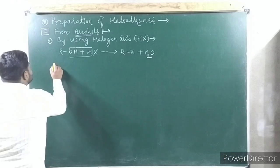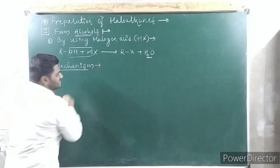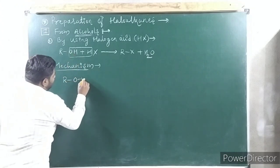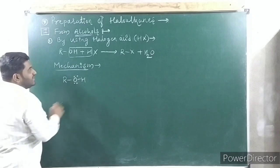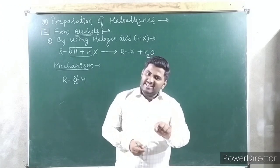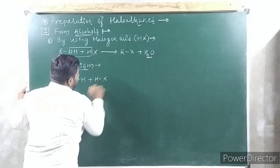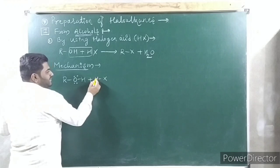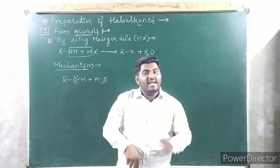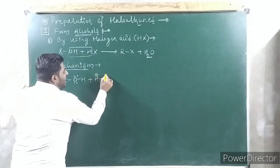So what is the mechanism? This mechanism is very important for competitive purposes, not for board exams. First, you take alcohol, which has a lone pair on the oxygen. HX — it may be HCl, HBr, or HI — is an acid, so it will donate a proton. The lone pair attacks hydrogen. Now, halogen is more electronegative than hydrogen; therefore, those electrons are taken by halogen. In organic chemistry, one who accepts electrons gets negative, one who donates gets positive — so hydrogen gets plus and halogen gets minus.